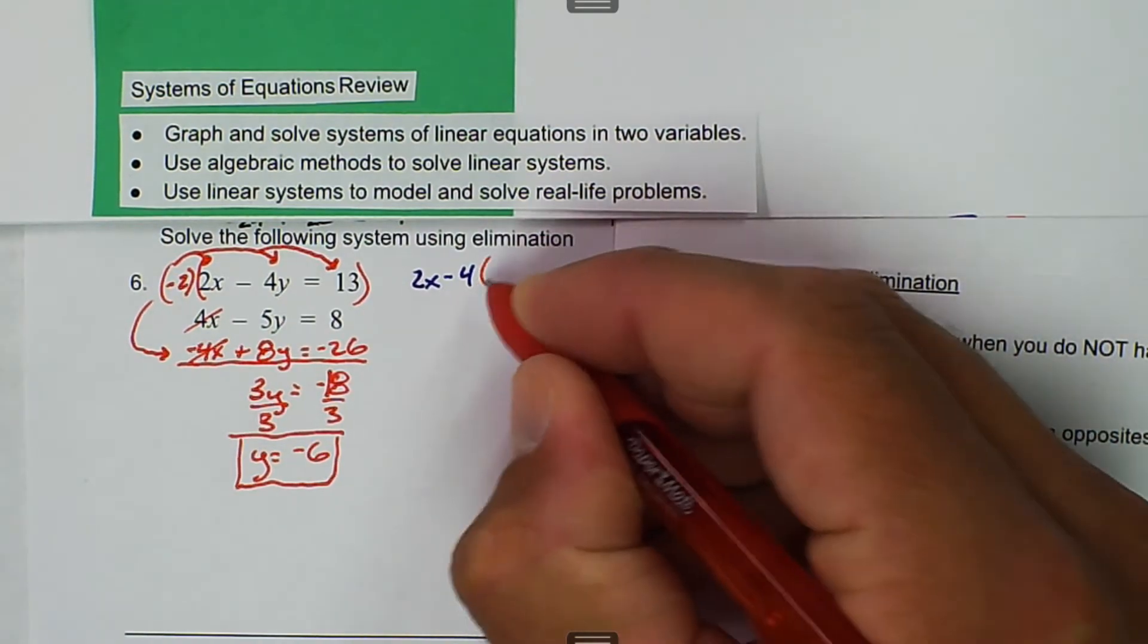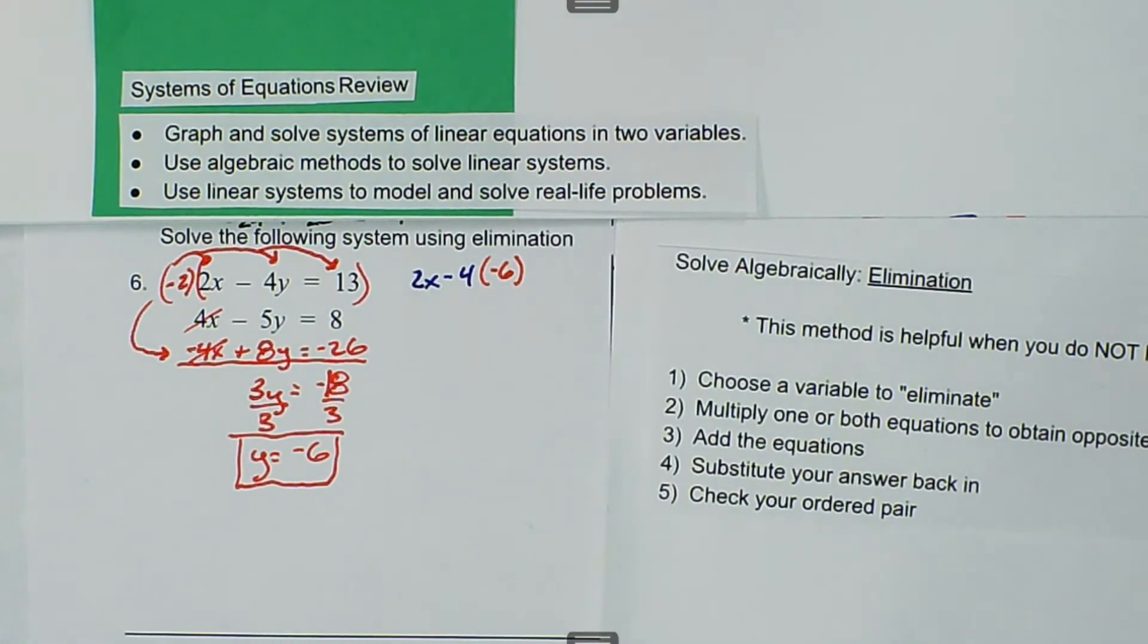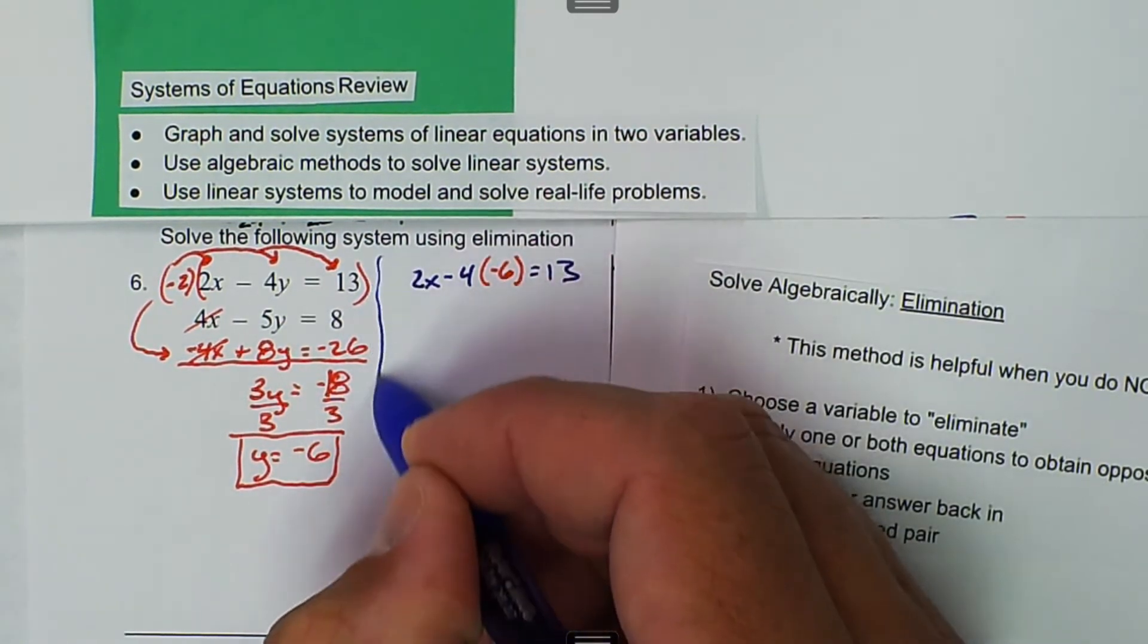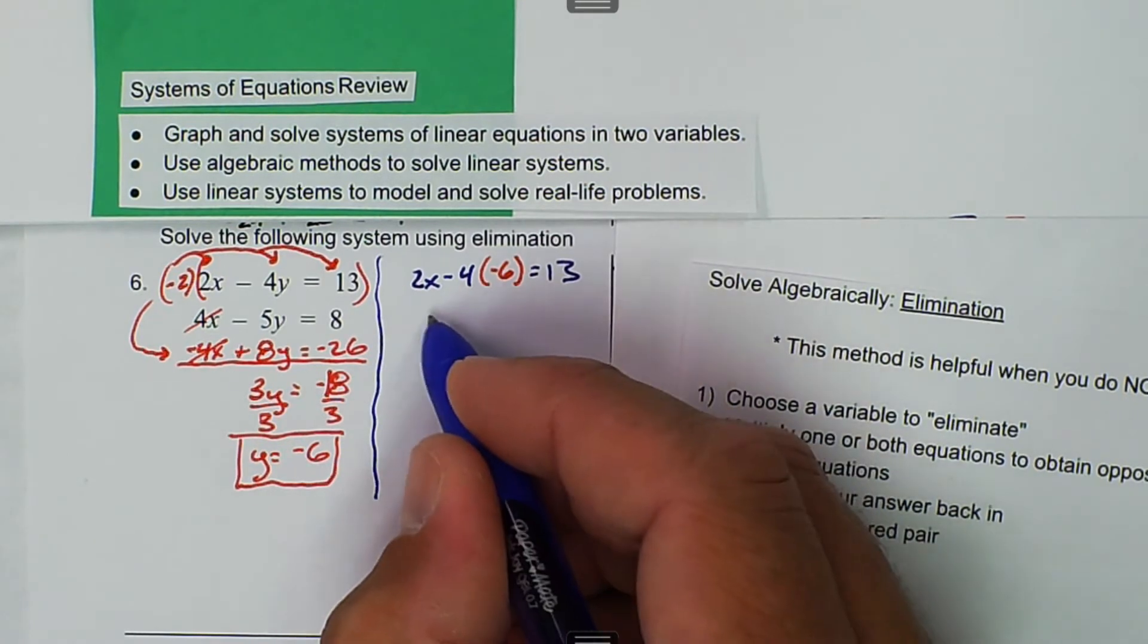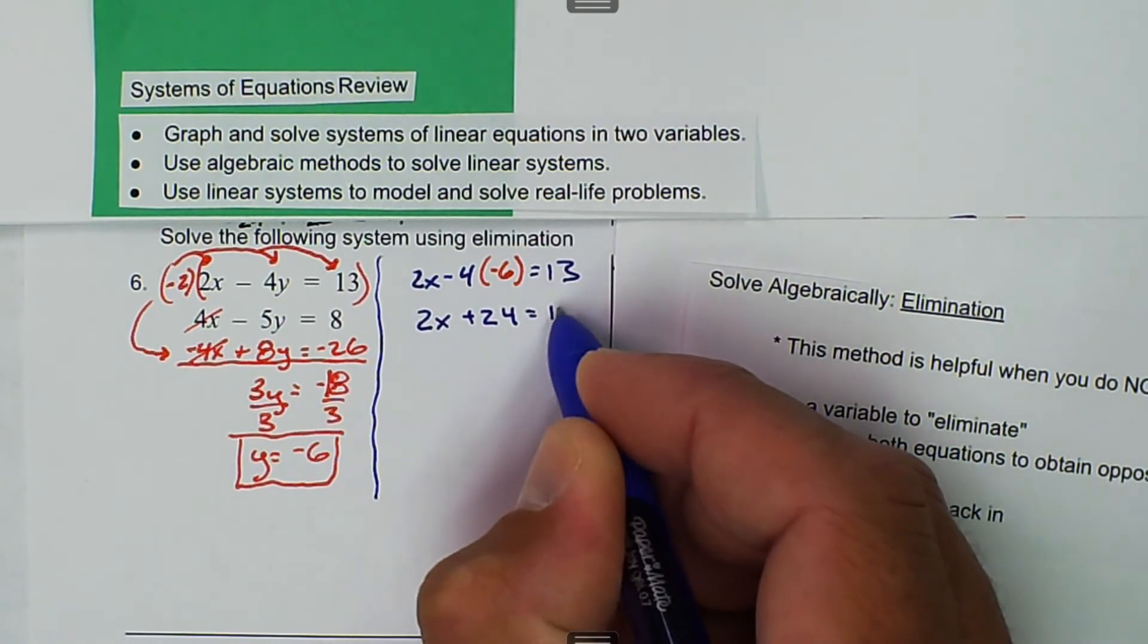So here we have 2x minus 4, and then we're going to substitute in our y that we calculated. That's equal to 13. So then we get 2x plus 24 is equal to 13.